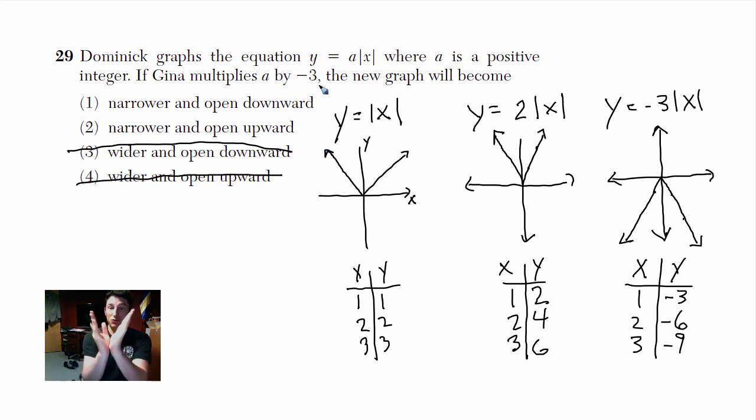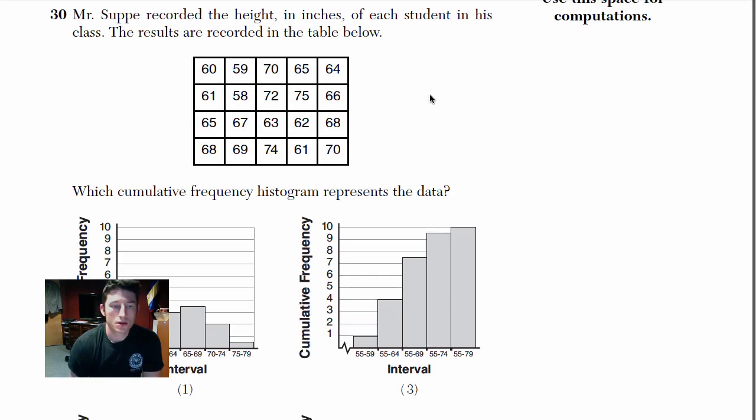When you multiply by an integer, it makes the rate of change, it increases the rate of change faster. So your graph is actually growing quicker. That's why it gets more narrow. If you multiply by a fraction, that's when it widens. So fractions make it widen, and coefficients, or integers, make the graph grow faster. So you're looking for something that is narrow and opens down. Alright, the last one for the part 1 here is number 30.